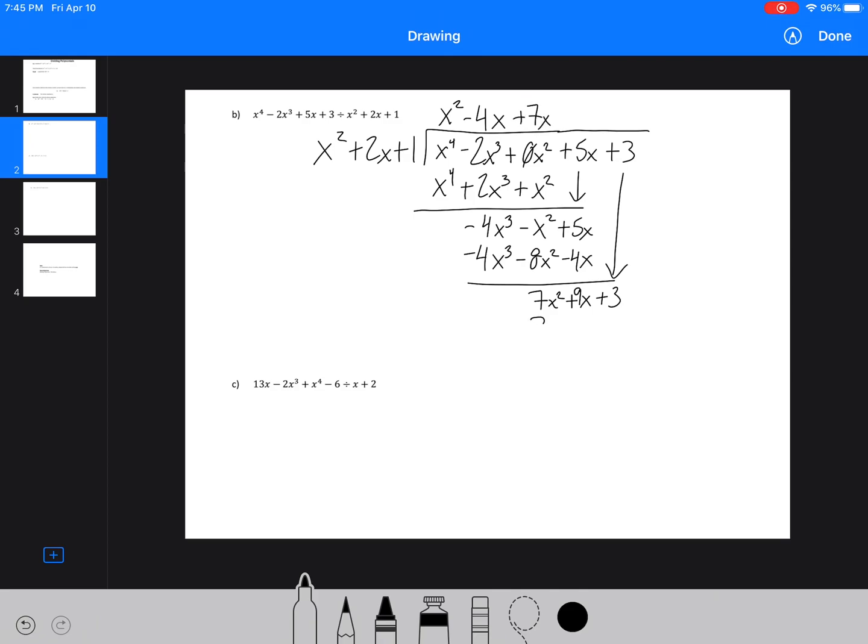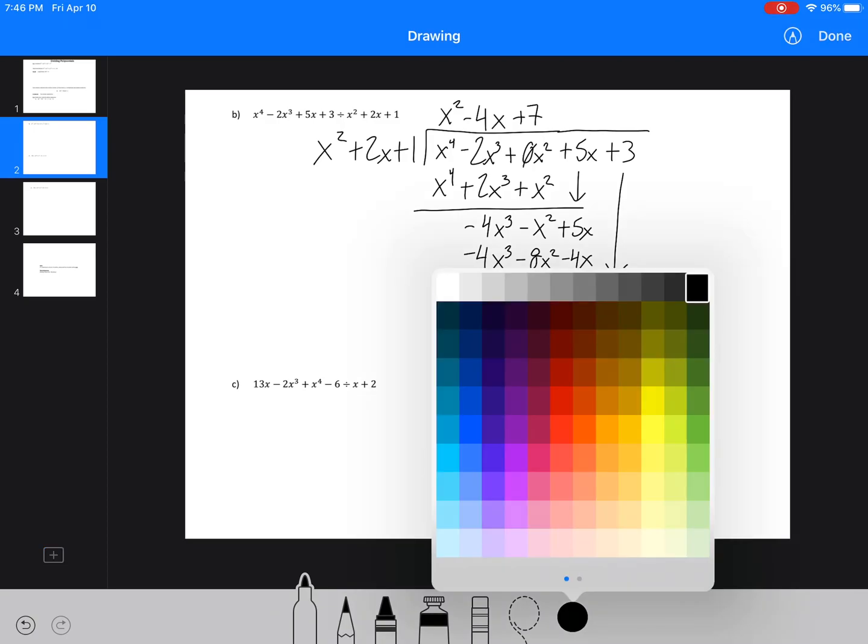Then we are going to divide that out. So we get plus 7. And then multiply through. 7x² plus 14x plus 7. So we're left with negative 5x minus 4.